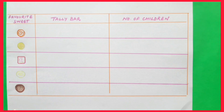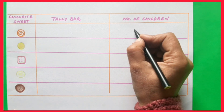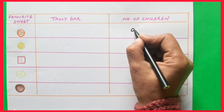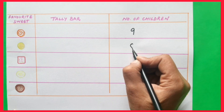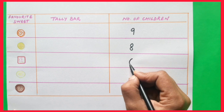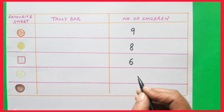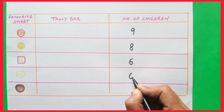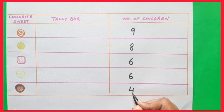Children, we will write this collected information in the form of a table. The children who like jalebi are nine. Children who like laddu are eight. Children liking barfi are six. Children liking rasgulla are again six. And children liking gulab jamun are four.